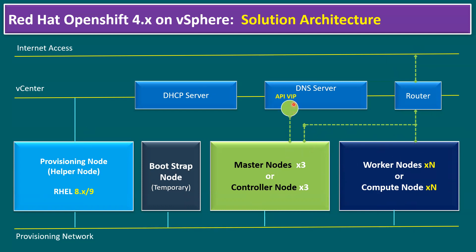We have communication to the API VIP and ingress VIP. The API VIP communicates mainly on the control plane node, and the ingress VIP on worker plane nodes — for application and external communications.